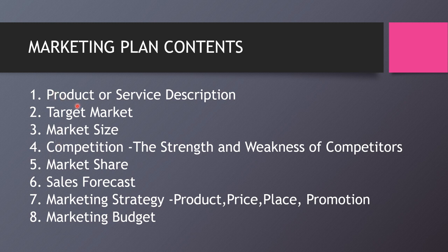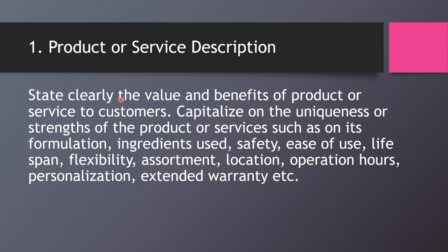There are eight items. The first one is product and service description. I will explain each one further. Basically, I want to see these eight items in your marketing plan. The first one, product or service description, will state clearly the value and benefits of the product or services you are offering. You should explain in a paragraph the uniqueness or strength of the product or services.